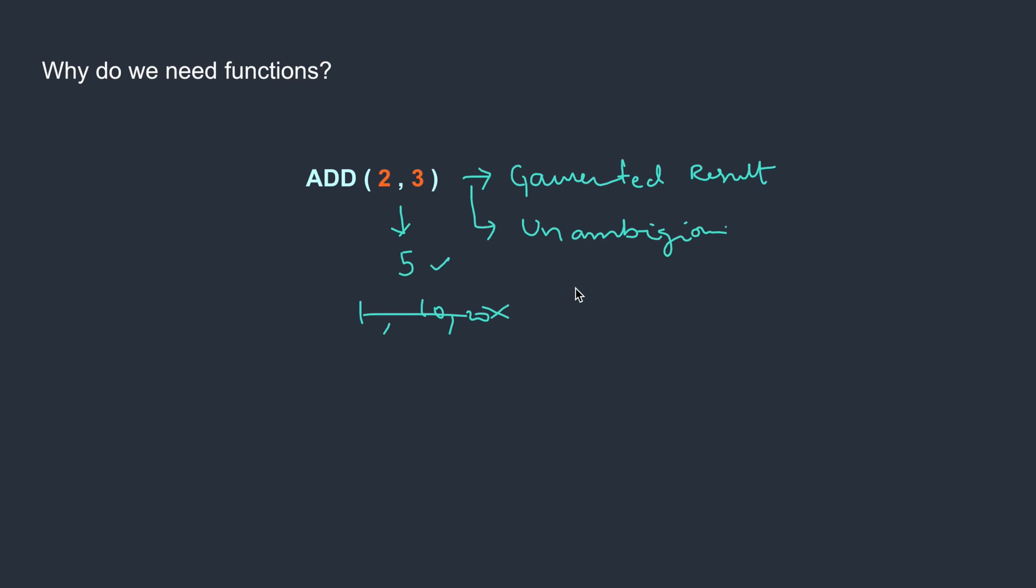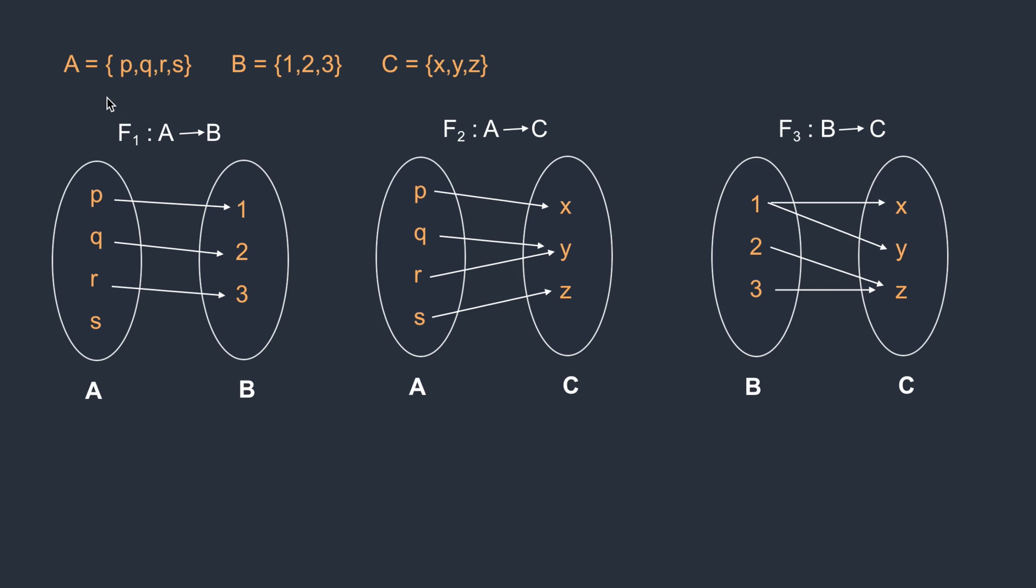Let's take some examples to test for the conditions of function. Here we have three sets a, b, and c, and there's some function f1, f2, and f3. Look at this. Is this a function? No, this is not a function because here one of the elements in the domain has no mapping. Therefore, this is not a function. Function says every element should have a mapping.